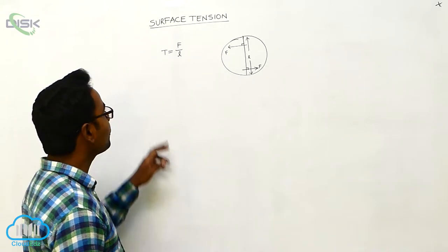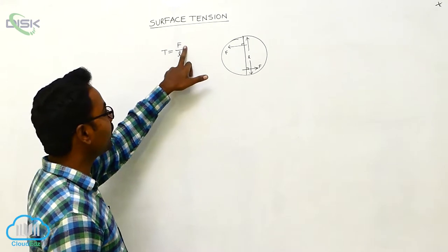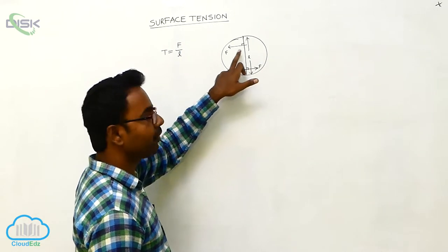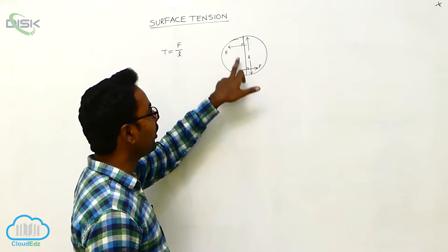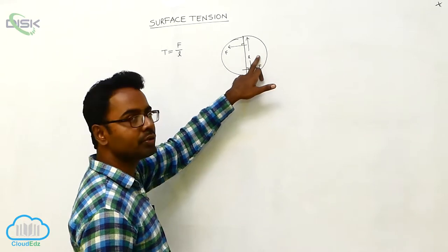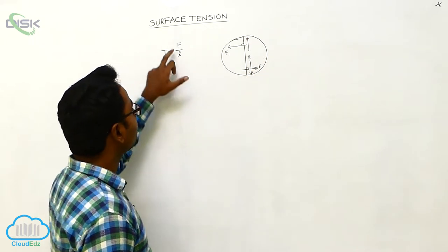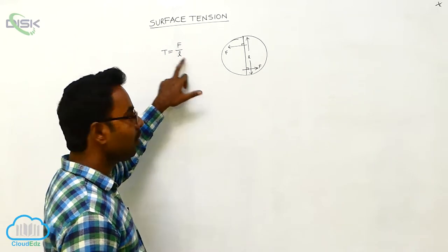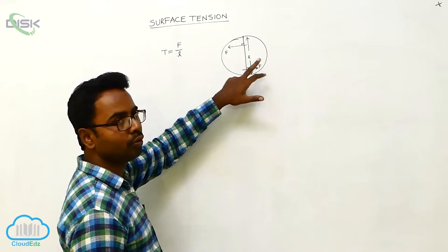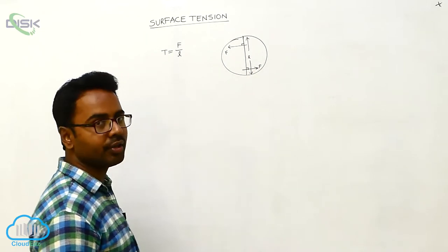Surface tension is defined as T equals F by L. Here, if we divide the free surface of the liquid into two parts, F and F act on the two parts at right angles to the imaginary line drawn on the surface. The force per unit length of the imaginary line, acting in opposite directions on the two parts, is called surface tension.